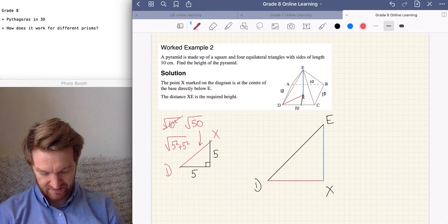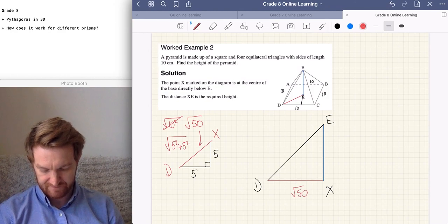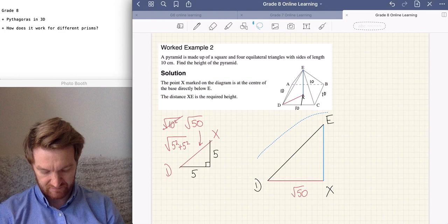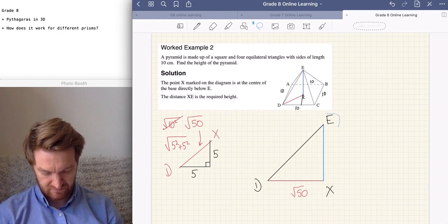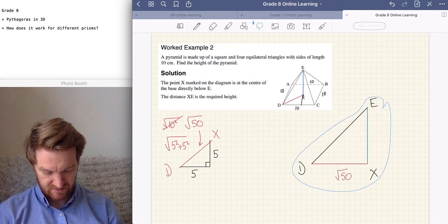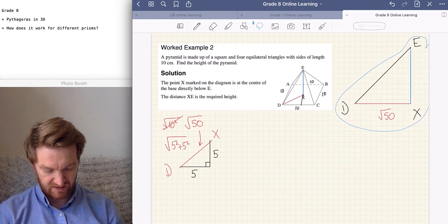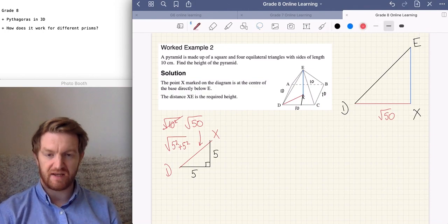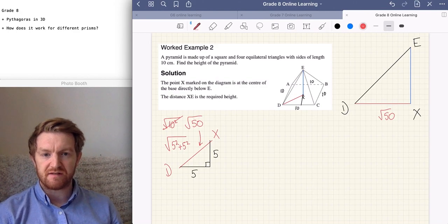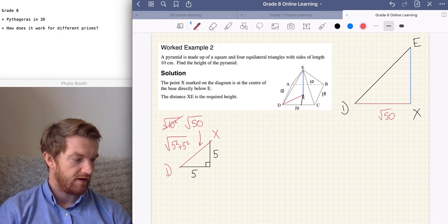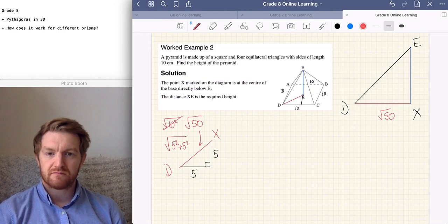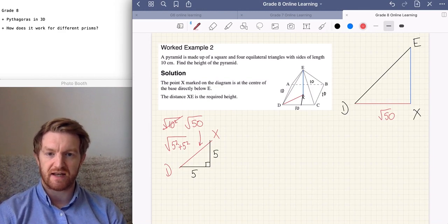What we know now, we can fill this in, that this length here is the square root of 50. So, let's just move that over here, and we're going to now find that length of that blue line. So, again, we need a sketch, and we need to think about how we're going to find that.